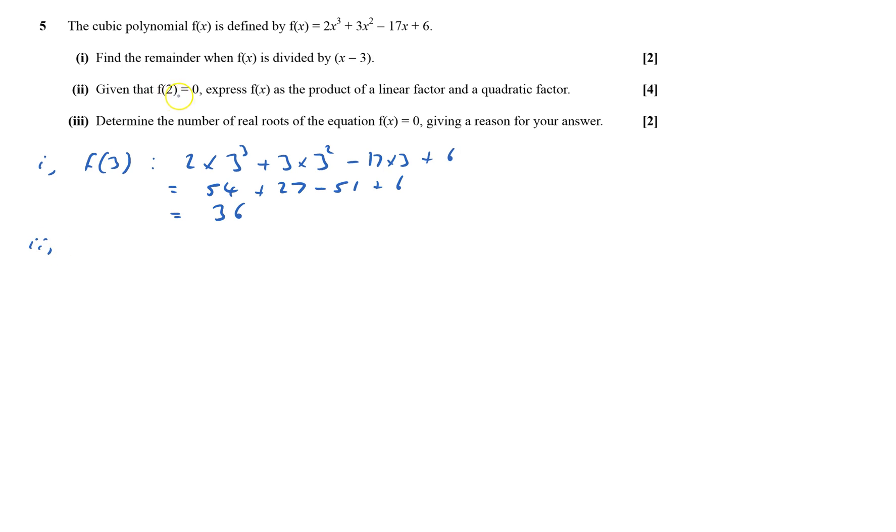Given that f(2) equals 0, therefore x minus 2 is a factor. We got a linear factor x minus 2 and a quadratic factor. I like using a grid method for this.